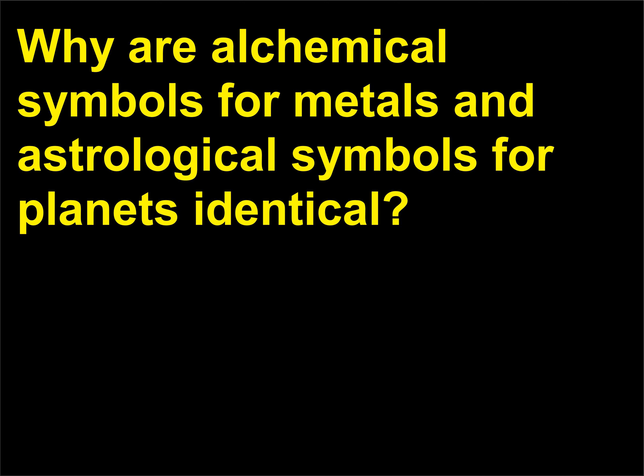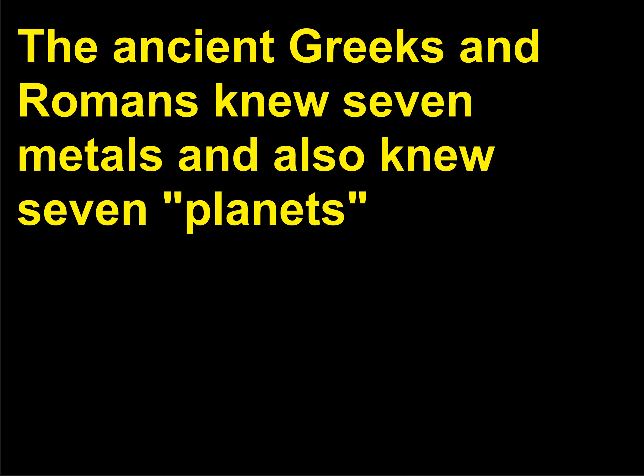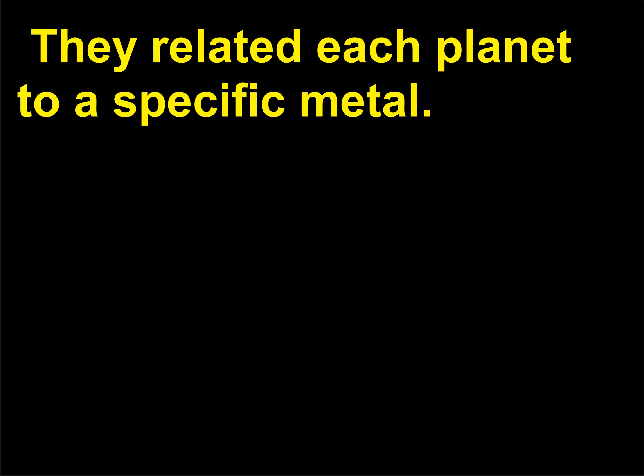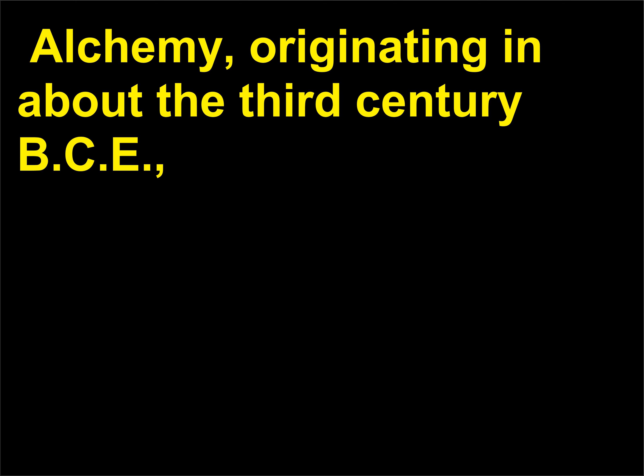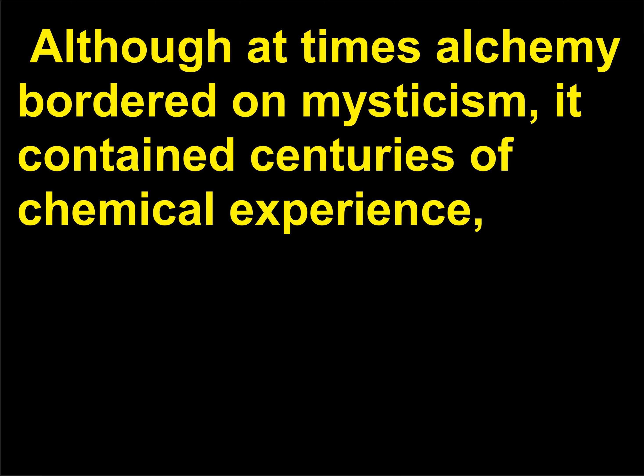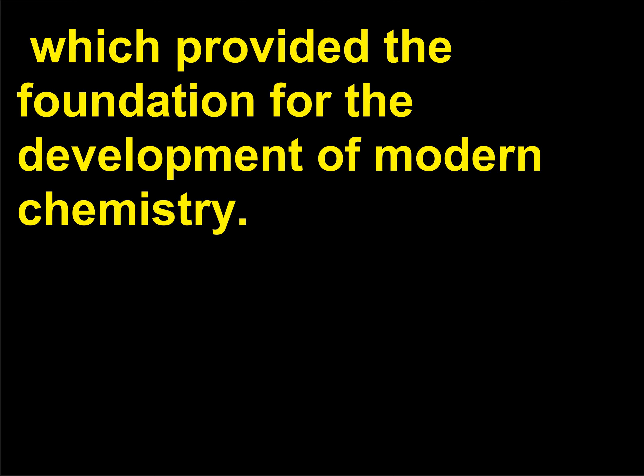Why are alchemical symbols for metals and astrological symbols for planets identical? The ancient Greeks and Romans knew seven metals and also knew seven planets — the five nearer planets plus the sun and the moon — and related each planet to a specific metal. Alchemy, originating in about the 3rd century BCE, focused on changing base metals such as lead into gold. Although at times alchemy bordered on mysticism, it contains centuries of chemical experience which provided the foundation for the development of modern chemistry.